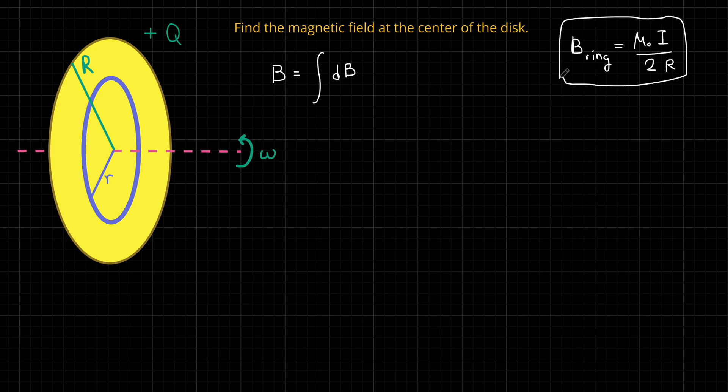Now you may be asking, so this is for a loop with current in it, right? We don't have that in this problem, but we have the ring, the insulating ring with uniform charge on it rotating, so it acts like a loop, a metal loop with current in it. And that's why we have a magnetic field at the center. Now let's formulate the contribution from each ring element using the general formula that I have at the corner here. So we'll just adapt that formula to our problem.